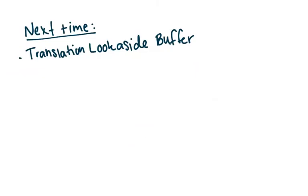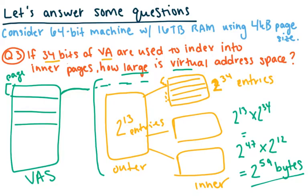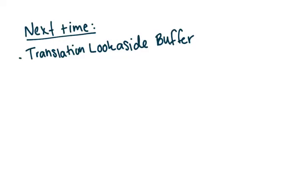That's multi-level paging, and of course all of this scales to many more levels. In fact, most modern computers use multiple levels of paging. Next time we're going to talk about the Translation Lookaside Buffer and how it can speed up this paging process. Thank you — let me know if you have any questions.